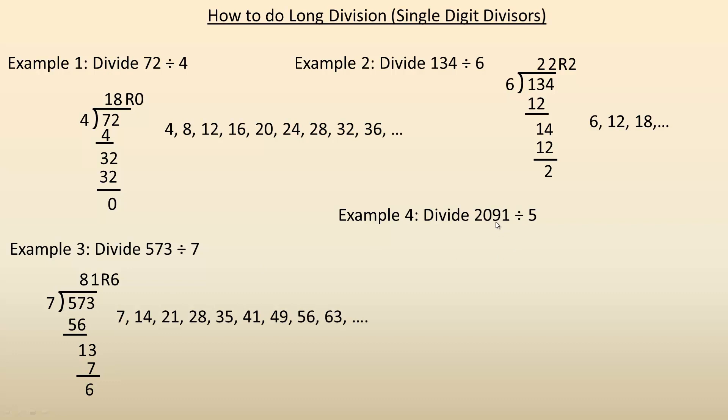Last example, number 4 here, so we're dividing 2,091 by 5. So first divide 5 into 2. And again, 2 is smaller than 5. So 5 does not go into 2 even once. So now we include the 0, so we're actually dividing 5 into 20. So we need to write the first few multiples of 5, so 5, 10, 15, 20. 20 is actually the 4th multiple, 1, 2, 3, 4, the 4th multiple of 5. So we'll put a 4 up here, and 4 times 5 is 20. And so we subtract, 20 minus 20 is 0, and we bring the 9 down.